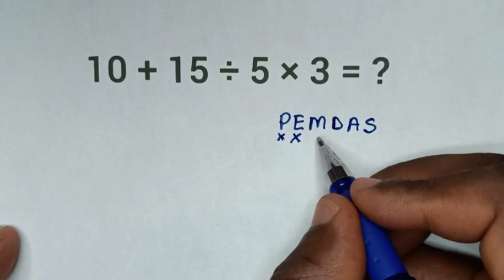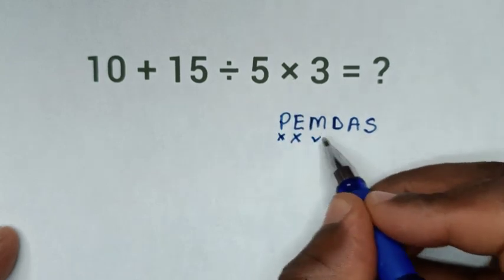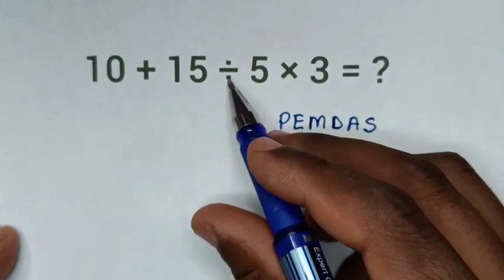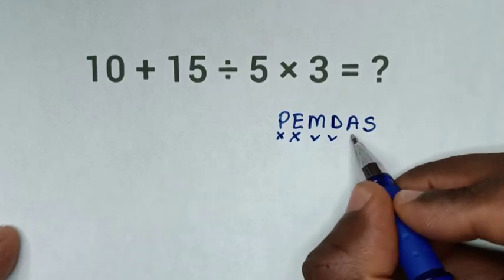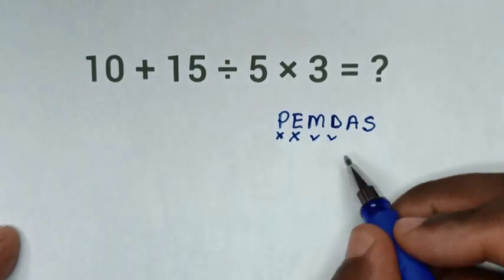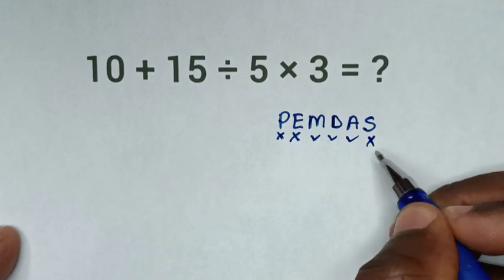M is multiplication, we have multiplication here. D is division, we have division here. A is addition, we have addition here. S is subtraction, we don't have subtraction.